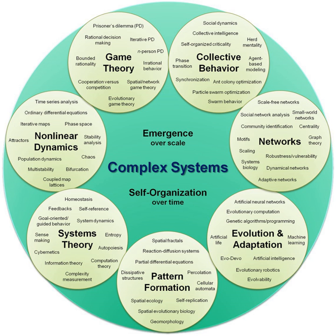Systems ecology is an interdisciplinary field of ecology, a subset of earth system science, that takes a holistic approach to the study of ecological systems, especially ecosystems. Systems ecology can be seen as an application of general systems theory to ecology. Central to the systems ecology approach is the idea that an ecosystem is a complex system exhibiting emergent properties. Systems ecology focuses on interactions and transactions within and between biological and ecological systems, and is especially concerned with the way the functioning of ecosystems can be influenced by human interventions.